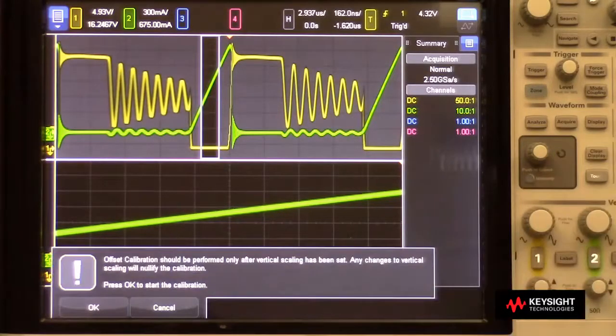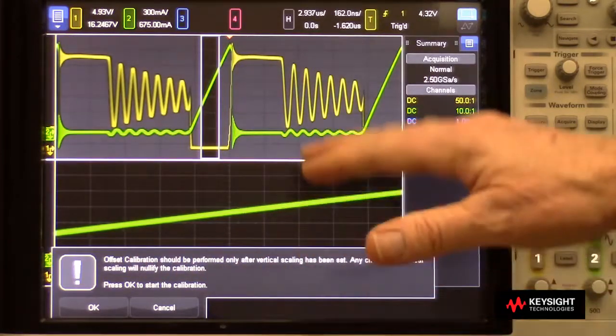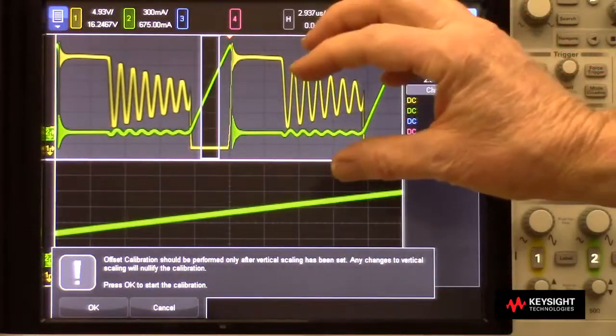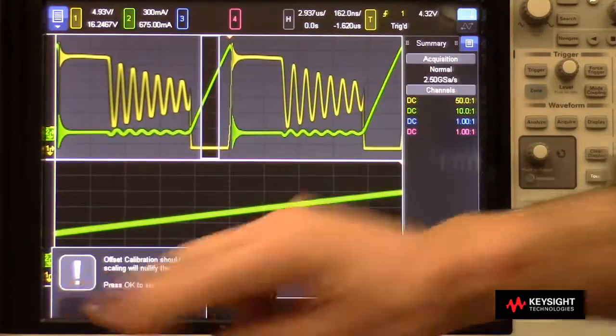I'll press offset calibration. I get a note up here that tells me it should be performed at the settings I'm going to use for the measurement. We've got the scope all set up. We're not going to change it. I press OK.